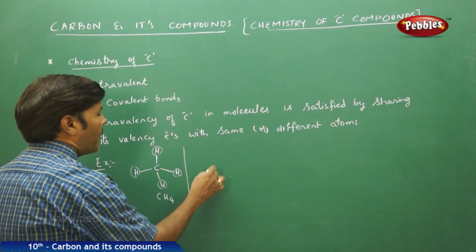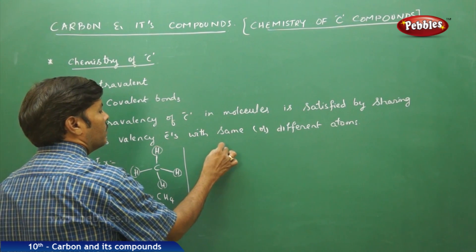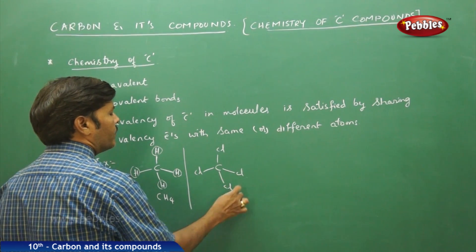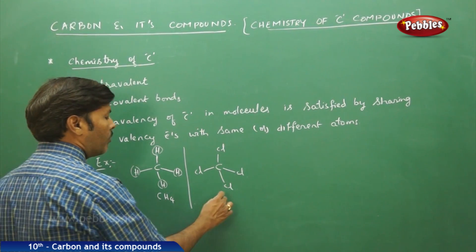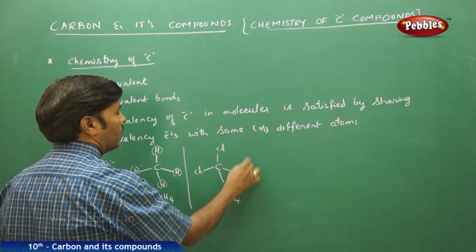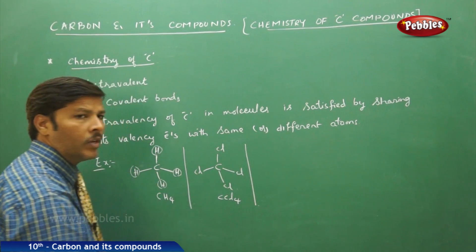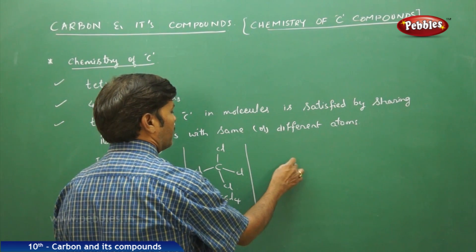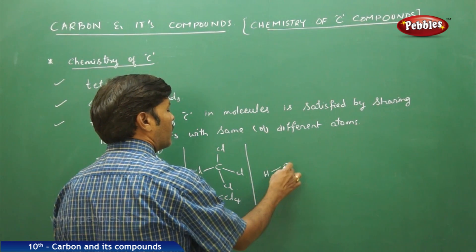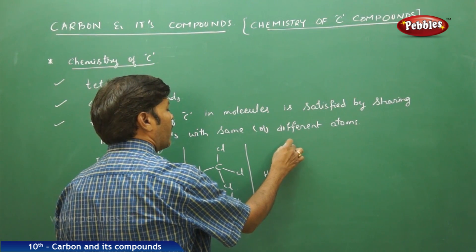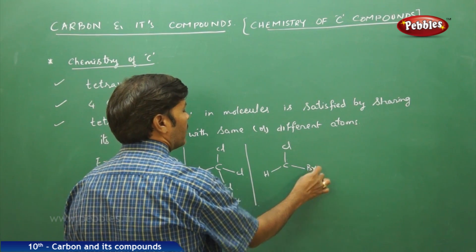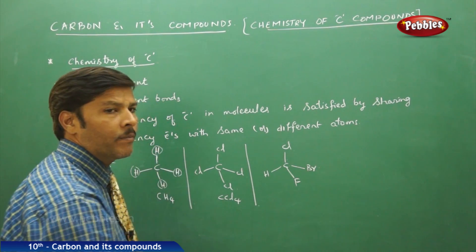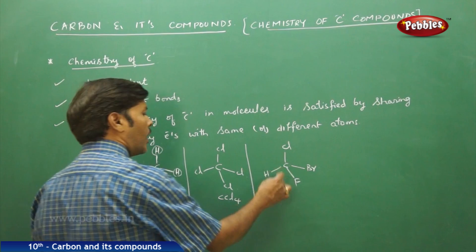Moving on to carbon tetrachloride, CCl4 — carbon shares its four valence electrons with the valence electrons of chlorine. Likewise, carbon can share its valence electrons with hydrogen, with chlorine, with bromine, and also with fluorine. This gives us chlorofluorocarbon compounds.